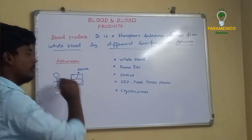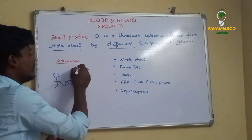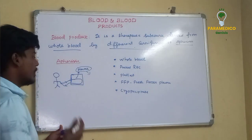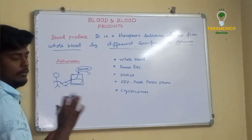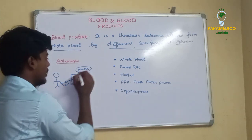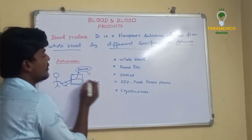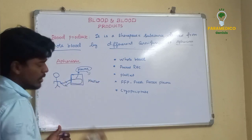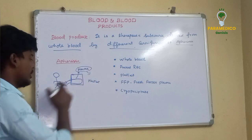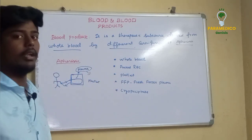Using the A4SS apheresis method, you can complete a cycle to collect plasma, platelets, or RBCs depending on what component is needed. If you want to collect plasma you can do so; if you want platelets or WBCs you can select those as well. This is the A4SS apheresis method.